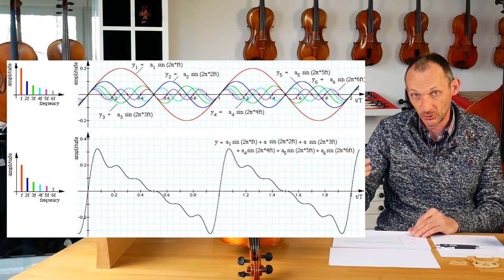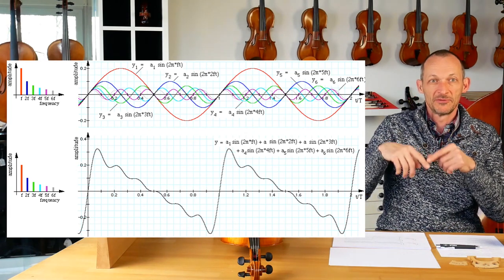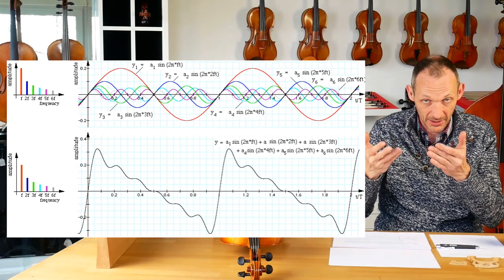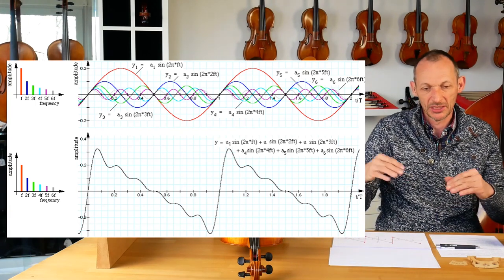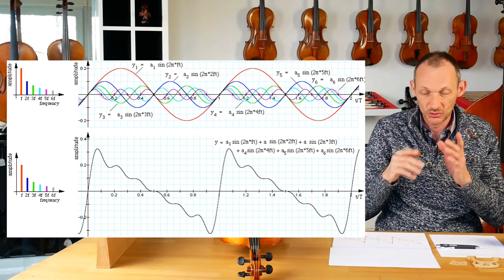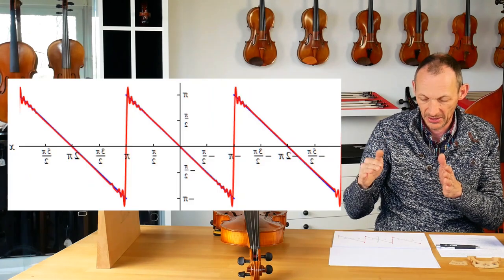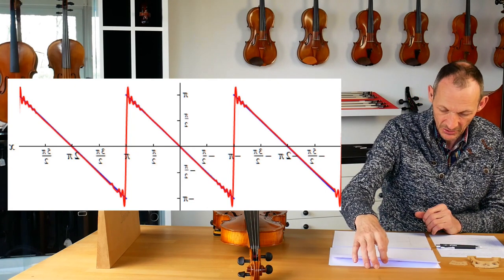You can do Fourier analysis backwards and forwards — when you have the sawtooth profile, you can deduce which fundamental and overtones are present. And if you add up not only until the sixth overtone but up to the thirtieth, you get a real sharp sawtooth. So that's the basic idea: we have a fundamental with overtones that add up to a sawtooth profile — but that's not exactly what we're hearing, so there's more happening.